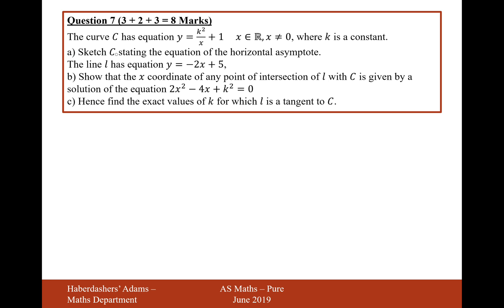Part A is sketch C stating the equation of the horizontal asymptote. So for this curve here, if we draw our axes, it's going to be the 1 over x curve but enlarged by a scale factor of k squared and then it's going to be moved up 1 because there's a plus 1 there.